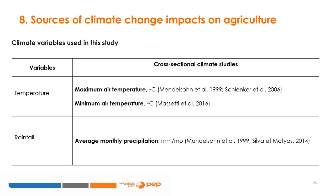In this course, we do not use indices. Our practical case is based on climate variables. Specifically, we use the maximum and minimum daily temperatures of the air. Other analyses could introduce their respective variability, the frequency at which temperatures fall above or below critical levels, and the days accumulated during the growing season. We also use the average monthly precipitations.